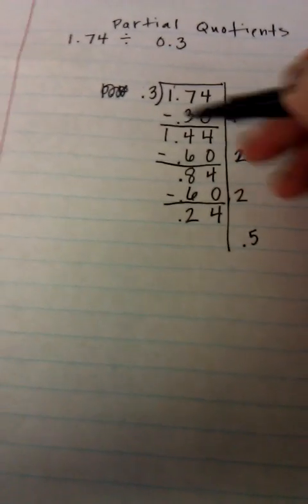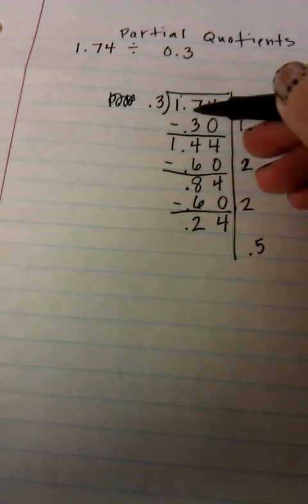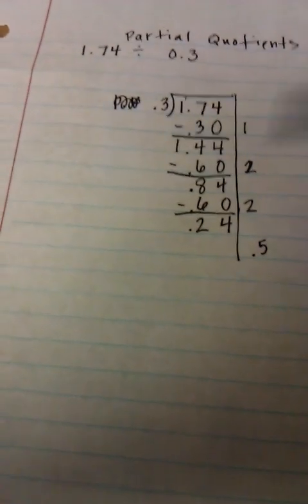which in decimal form, one of our benchmark decimals, is that 1 half equals 5 tenths, yes, I do have at least half. Half of 30 hundredths would be 15 hundredths, and I do have at least 15 hundredths.